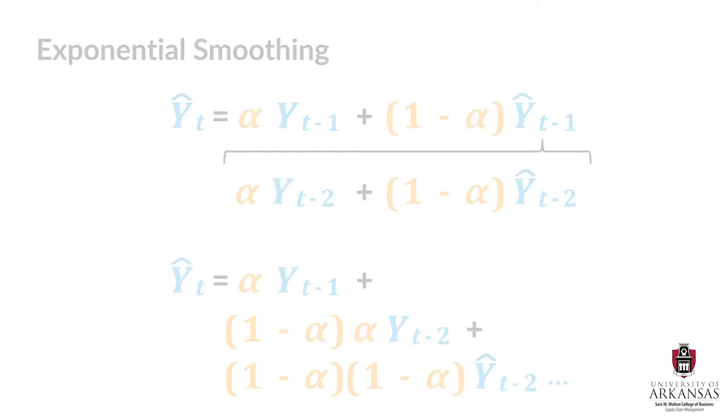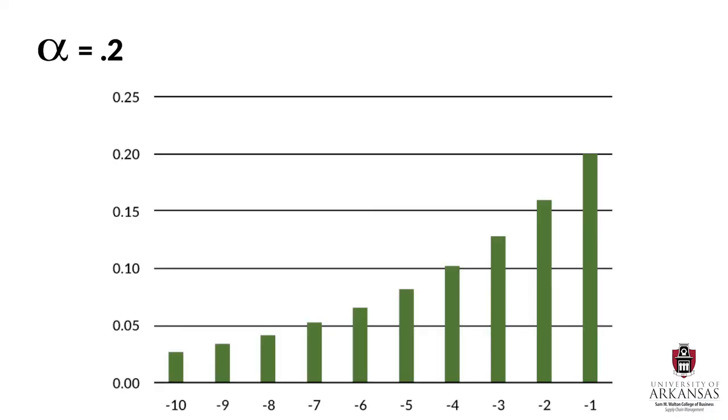This may still sound pretty abstract, but let me show you what the distribution of weights looks like for an alpha value of 0.2. If we use the exponential smoothing forecasting technique with an alpha of 0.2, our forecast will apply a weight of 0.2 to the immediately preceding demand observation in period minus 1, and we see that an exponentially declining set of weights is applied to more distant demand observations.